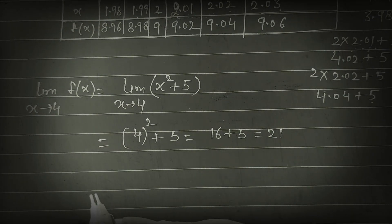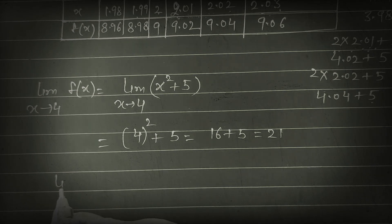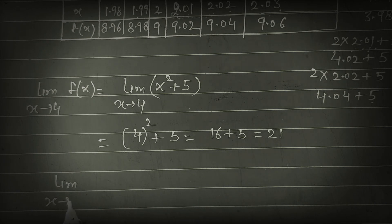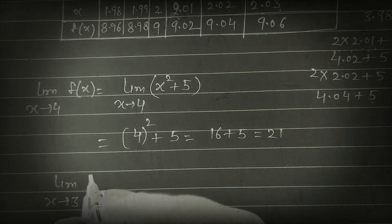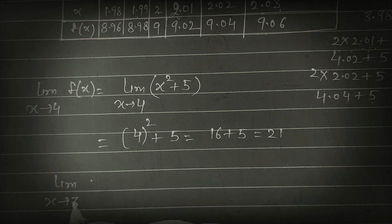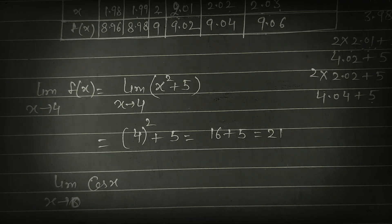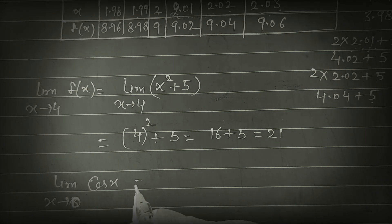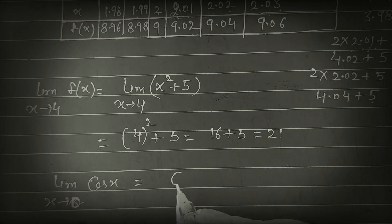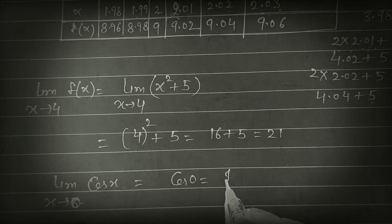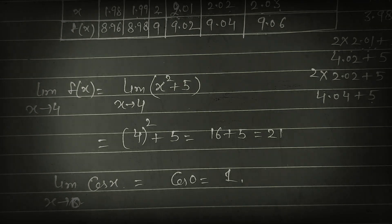We can take more examples. Suppose limit x tends to 0 of cos x. So it will be cos 0, and cos 0 value is 1. So the answer is 1.